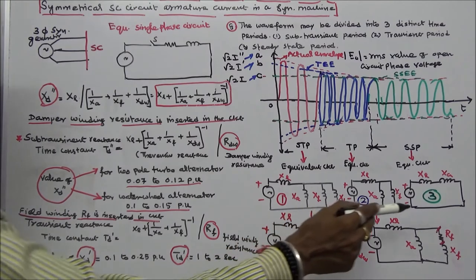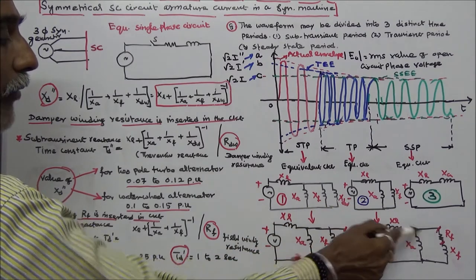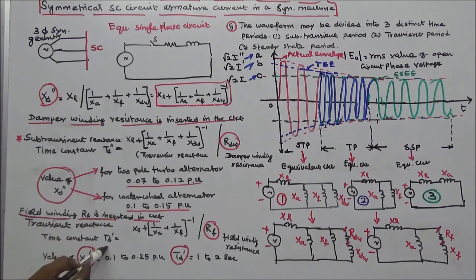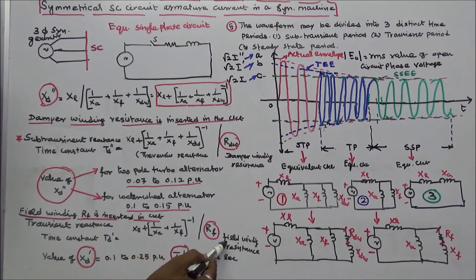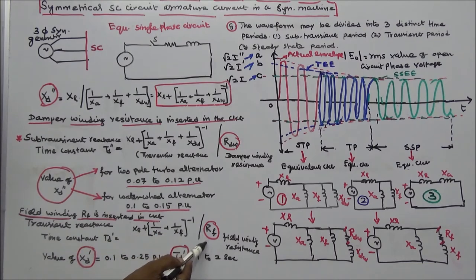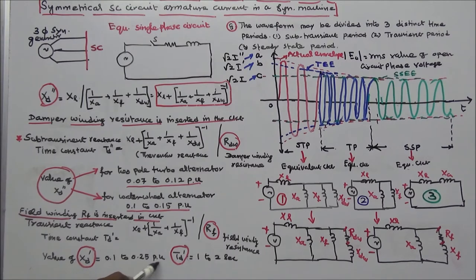If we include field winding resistance RF in the equivalent circuit, we can find the transient reactance time constant Td dash, equal to the Thevenin's equivalent reactance divided by field winding resistance RF. The Thevenin's equivalent reactance is XL plus the inverse of (1/XA + 1/XF), divided by RF. The value of X dash is 0.12 to 0.25 per unit, and Td dash is 1 to 2 seconds.